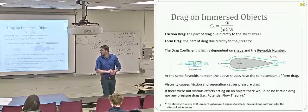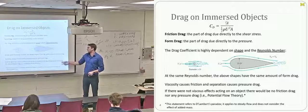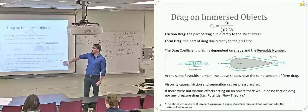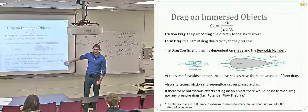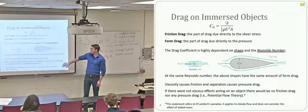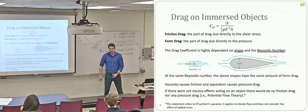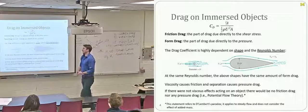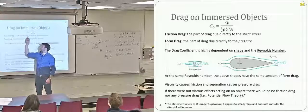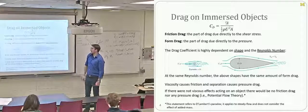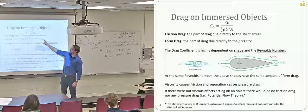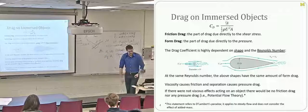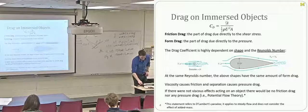If there's no viscosity in a fluid — what we call D'Alembert's paradox — then we get no drag or lift. This is intuitive for friction drag since there's no shear stress on the wall. What's interesting is looking at why we also end up with zero form drag when viscosity is absent. We'll look at this over the next few slides.